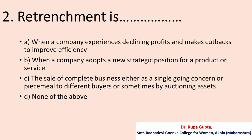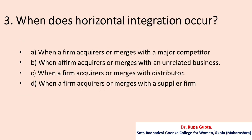Question number two: Retrenchment is — A. When a company experiences declining profits and makes cutbacks to improve efficiency. B. When a company adopts a new strategic position for a product or service. C. The sale of a complete business either as a single going concern or piecemeal to different buyers, or sometimes by auctioning assets. D. None of the above. The correct answer is A: when a company experiences declining profits and makes cutbacks to improve efficiency.